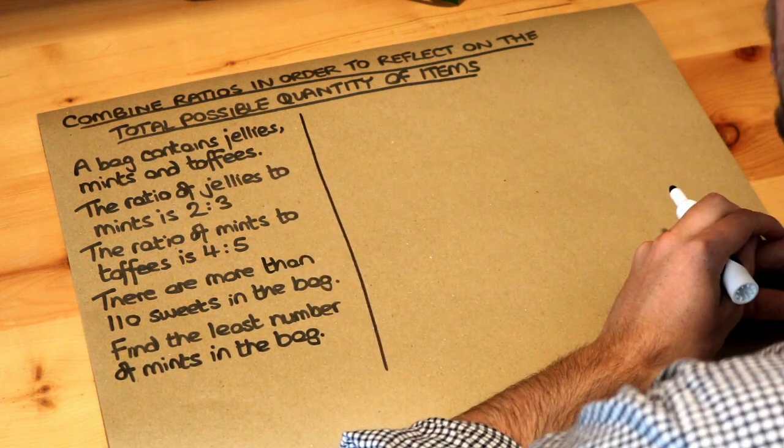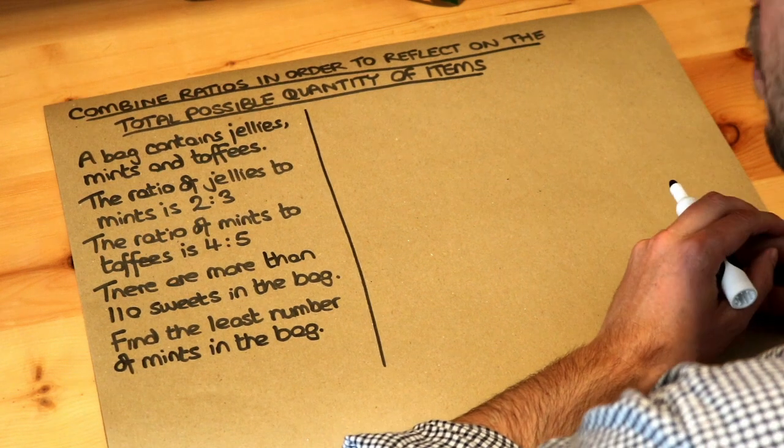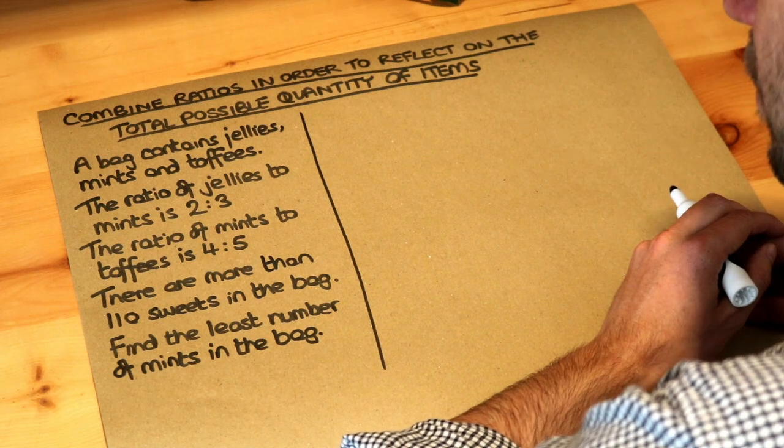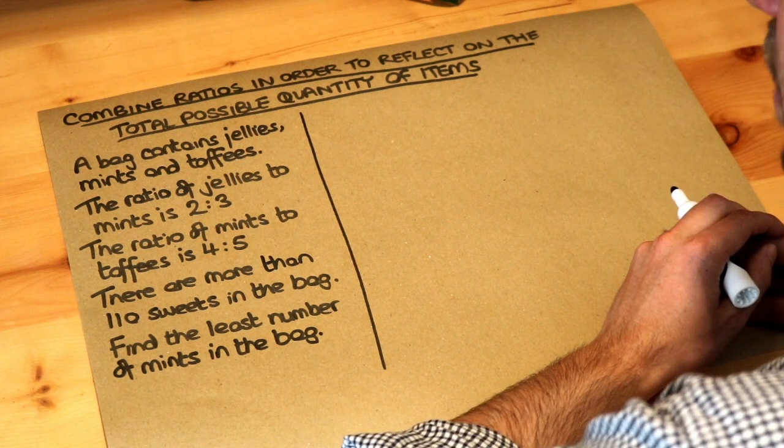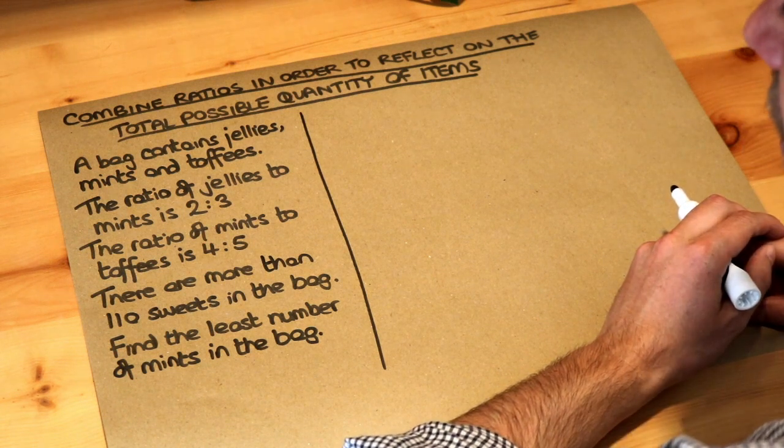Let's read the question. A bag contains jellies, mints and toffees. The ratio of jellies to mints is 2 to 3. The ratio of mints to toffees is 4 to 5. There are more than 110 sweets in the bag in total. Find the least number of mints in the bag.